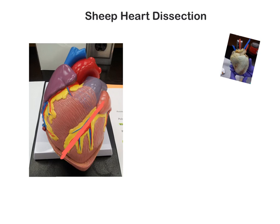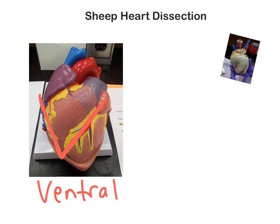What I kind of think of is that it's making a V, and V is for ventral. So that's the first thing I look for to determine that that is the anterior surface or the ventral surface of the heart.